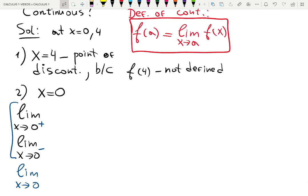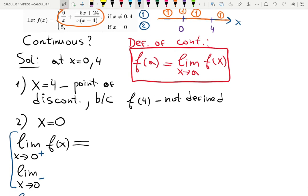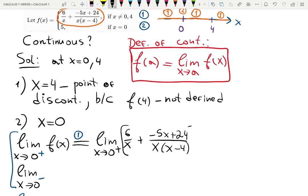We already agreed that when x is not zero, we are using equation number one. So when I'm writing down f of x here, I know that since x approaches zero but it is not zero, I will be using equation number one, not equation number two. Thus, now we can substitute the chosen line from the piecewise function, which is 6 over x plus negative 5x plus 24, x is multiplied by x minus 4. I don't really know what is happening in zero. If I plug zero right now, I will have 6 over zero, and then 24 over zero. It doesn't look good at all. Let's create common denominator and proceed with calculations.